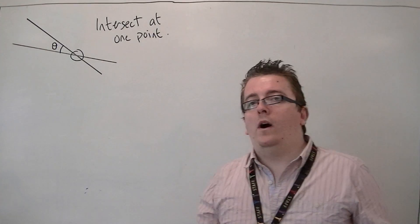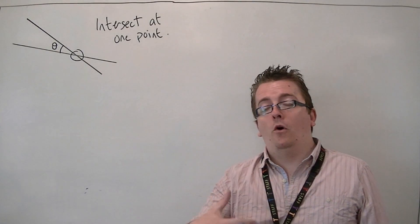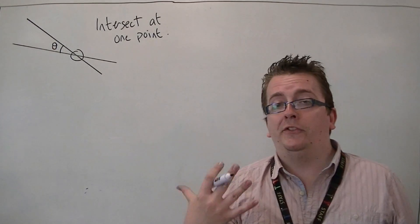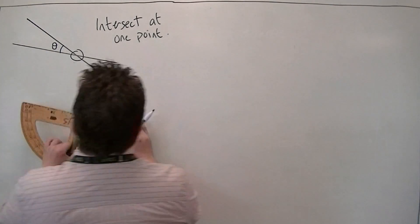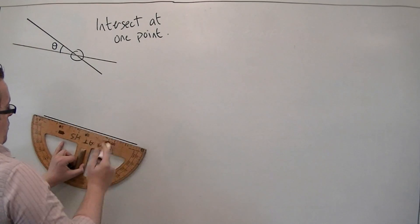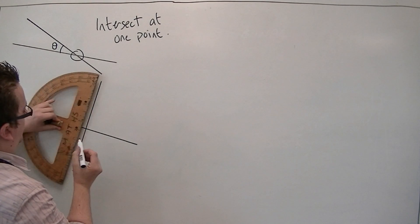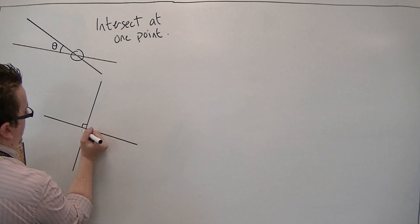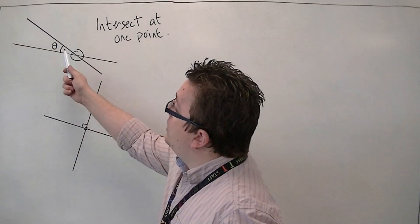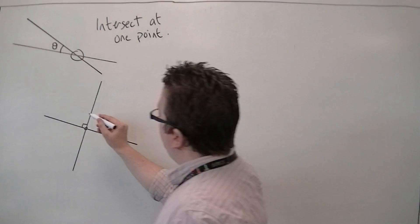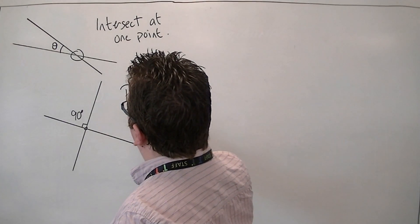Now, that angle isn't something we're going to be asked to work out in general, except in the particular case where you have a line, and the other line actually intersects it at a right angle. So it's still intersecting at one point, but now the angle is 90 degrees. When two lines intersect at 90 degrees, we call them perpendicular.